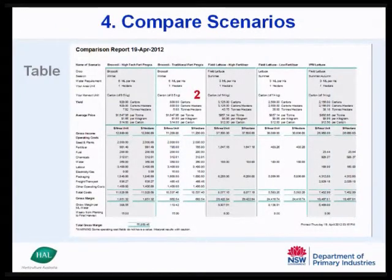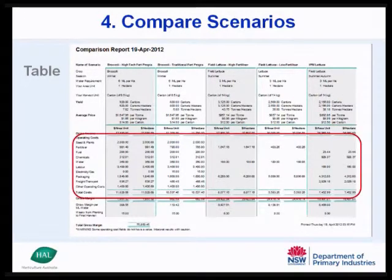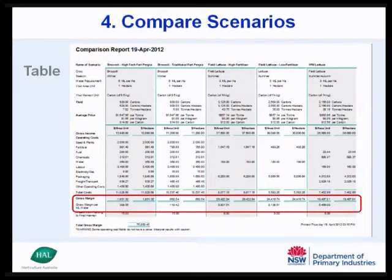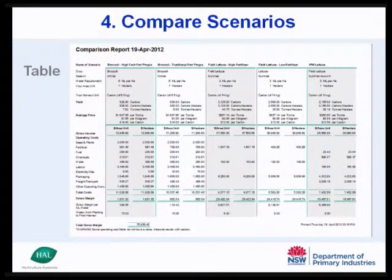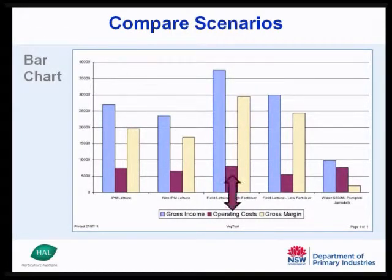In compare scenarios, up to five different financial summaries can be viewed. The income, operating cost and gross margin of these five different scenarios is shown. The same information from the compare scenarios table can also be viewed as a bar chart, with the gross income, operating costs and gross margin information presented in different colours.